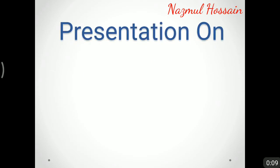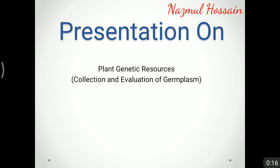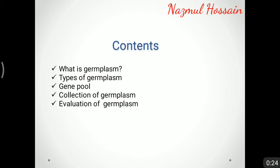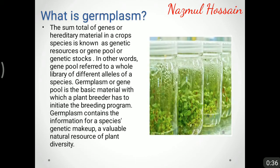Welcome to this presentation on plant genetic resources, especially the collection and evaluation of germplasm. The topics covered include: what is germplasm, types of germplasm, gene pool, collection of germplasm, and evaluation of germplasm. The sum total of genes or hereditary material in a crop species is known as genetic resource, gene pool, or genetic stocks. Germplasm or gene pool is the basic material with which a plant breeder has to initiate the breeding program.